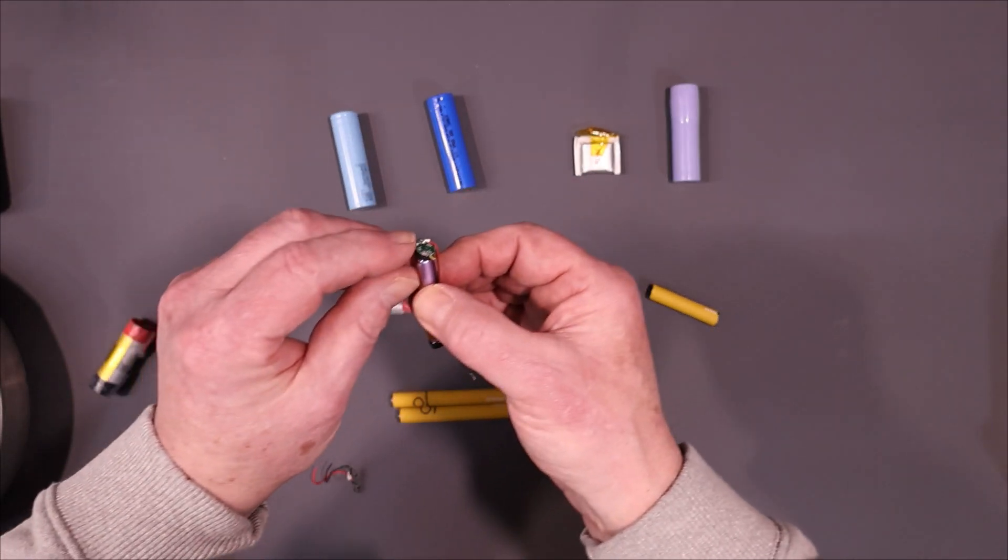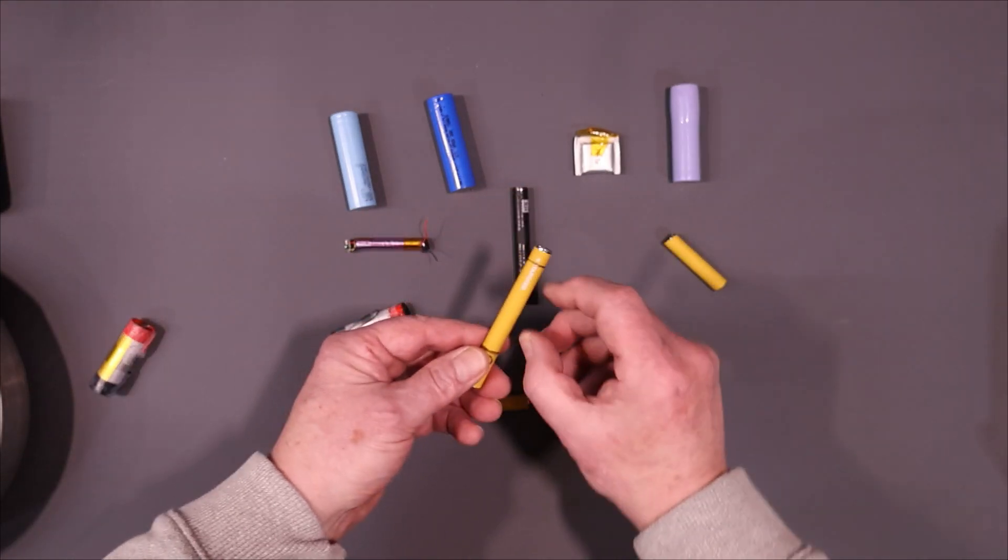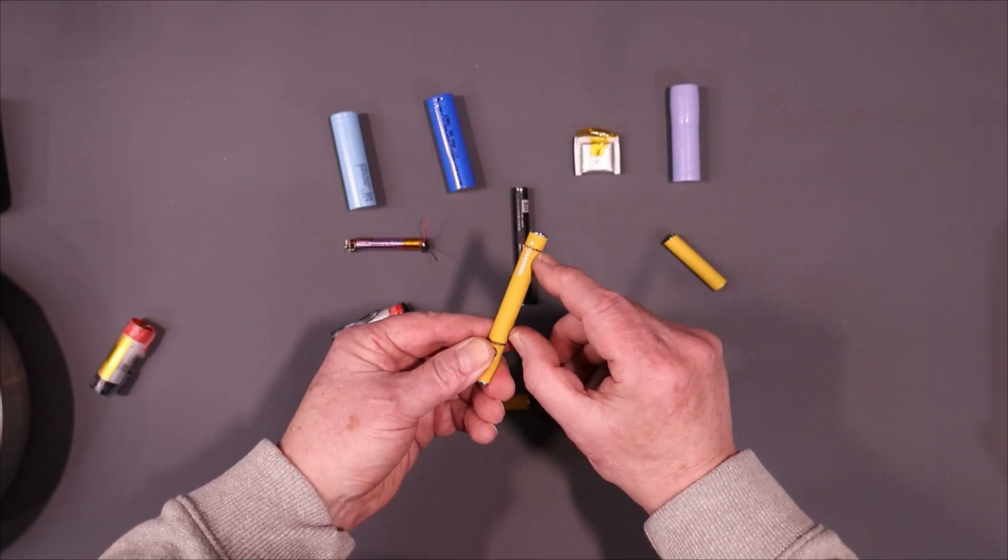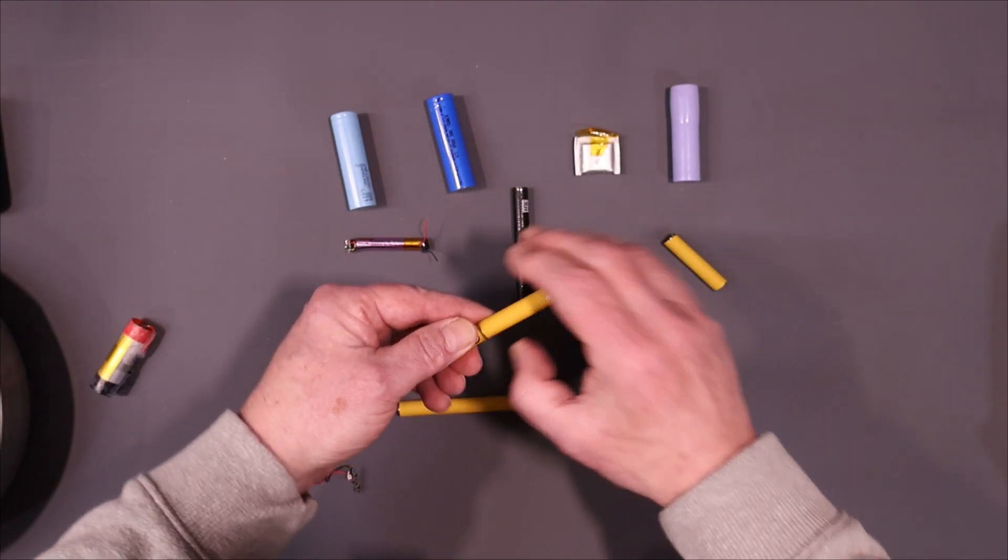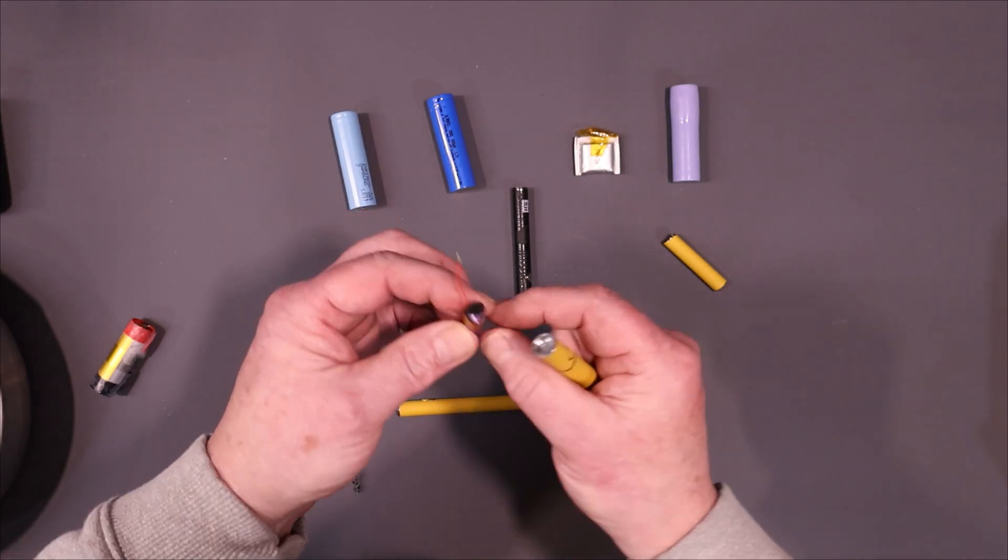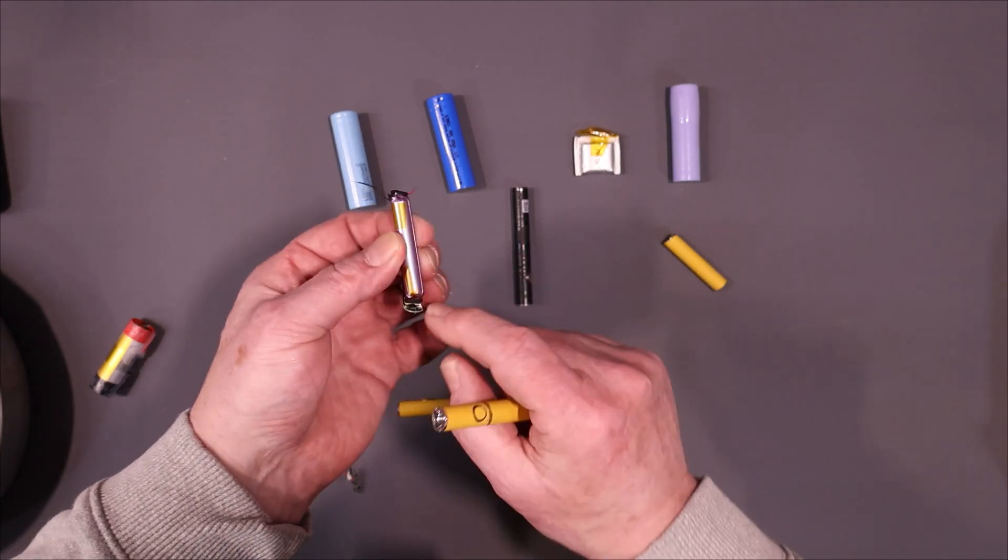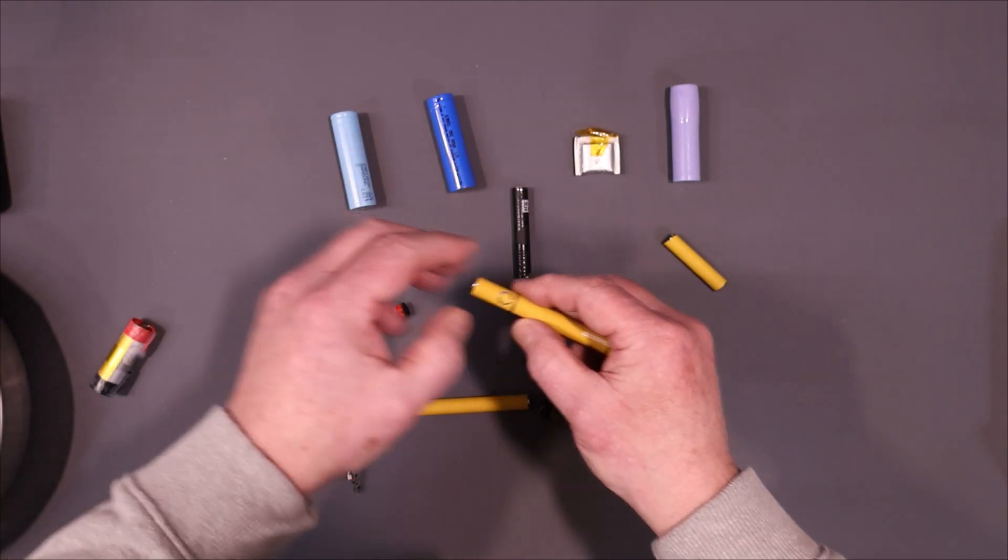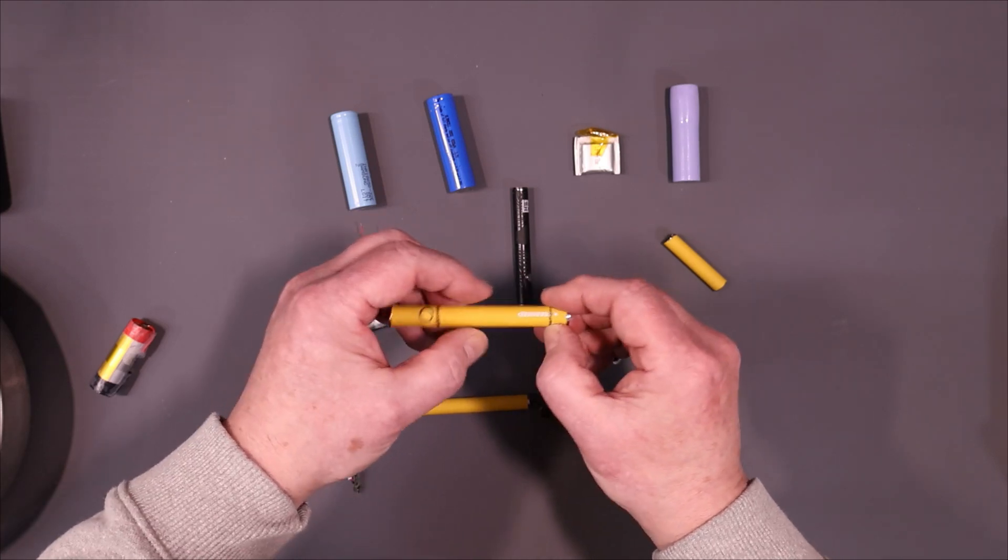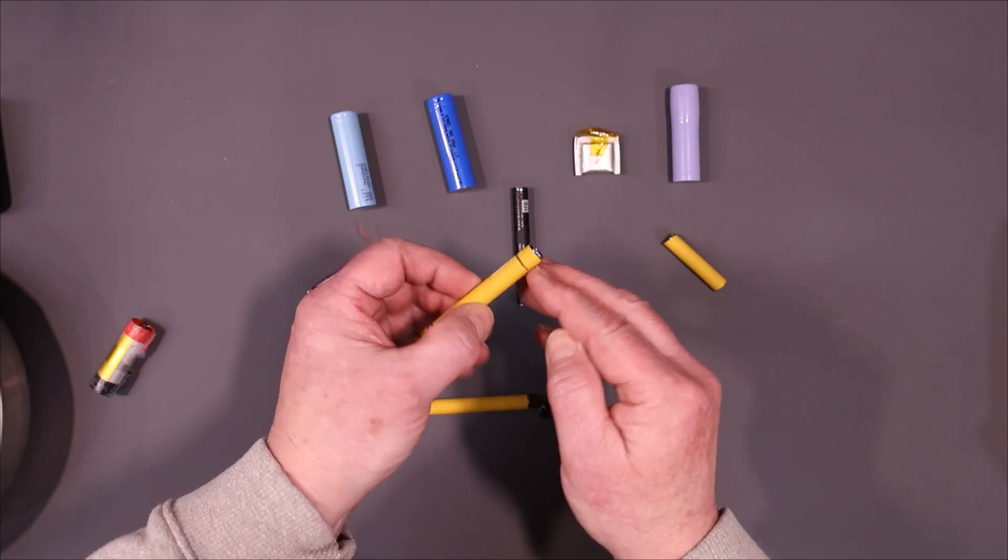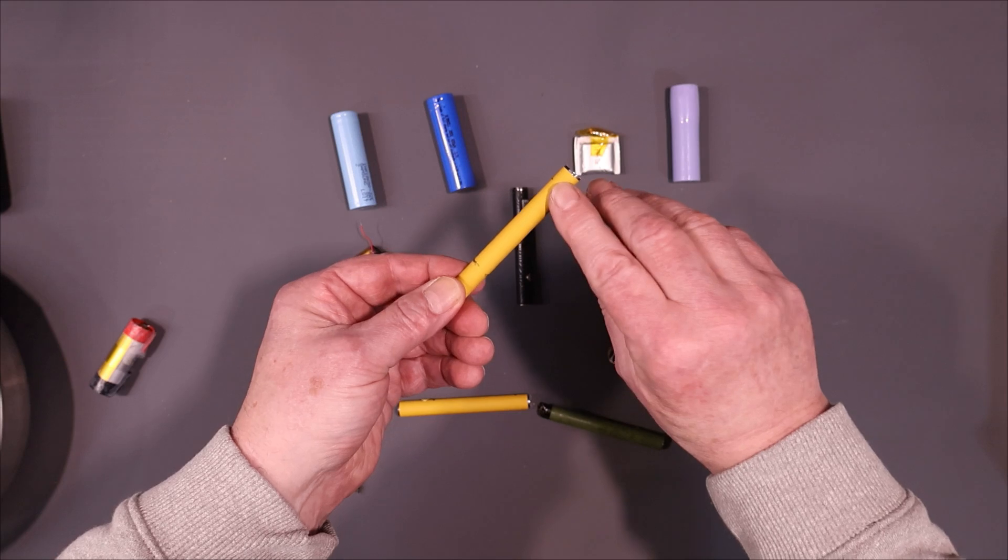This one has a protection module on it. The battery is down in here between here and this point. There's a little foam plug at the ends. You have to cut right of those foam plugs. Also, the wire runs along the bottom here.